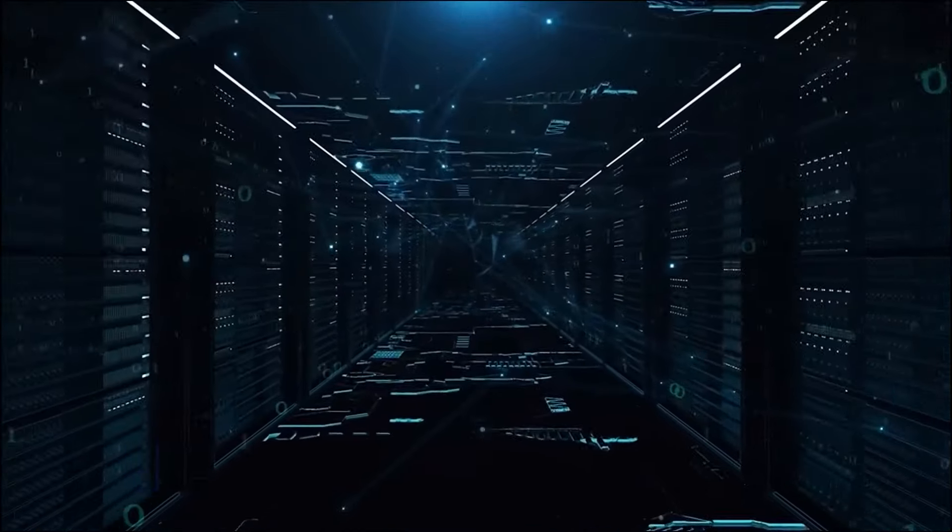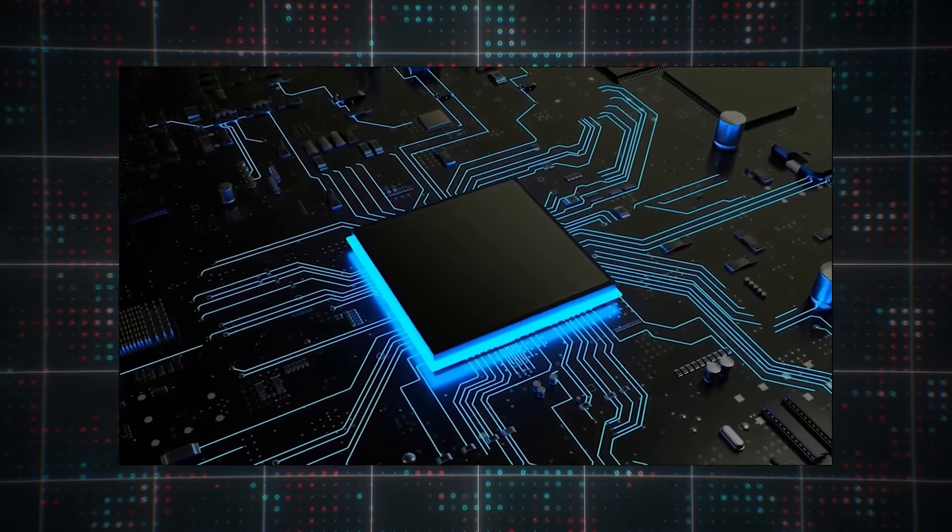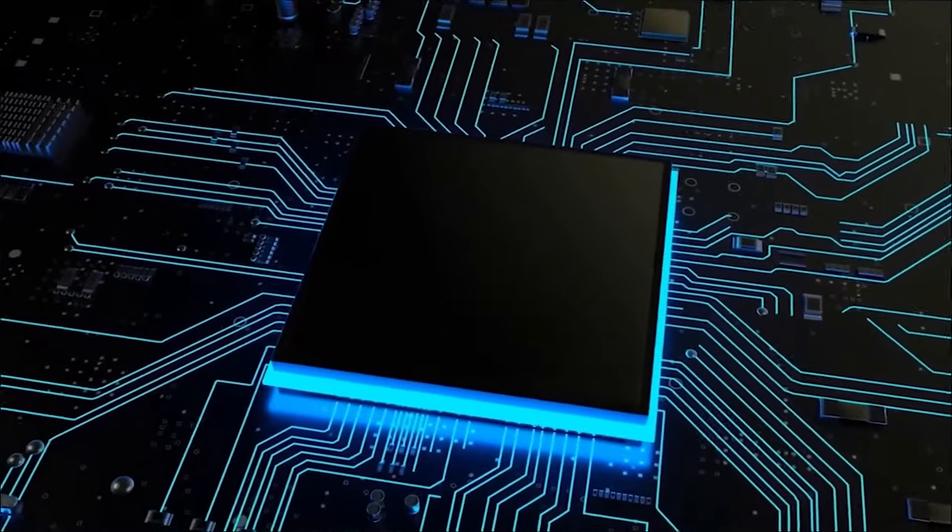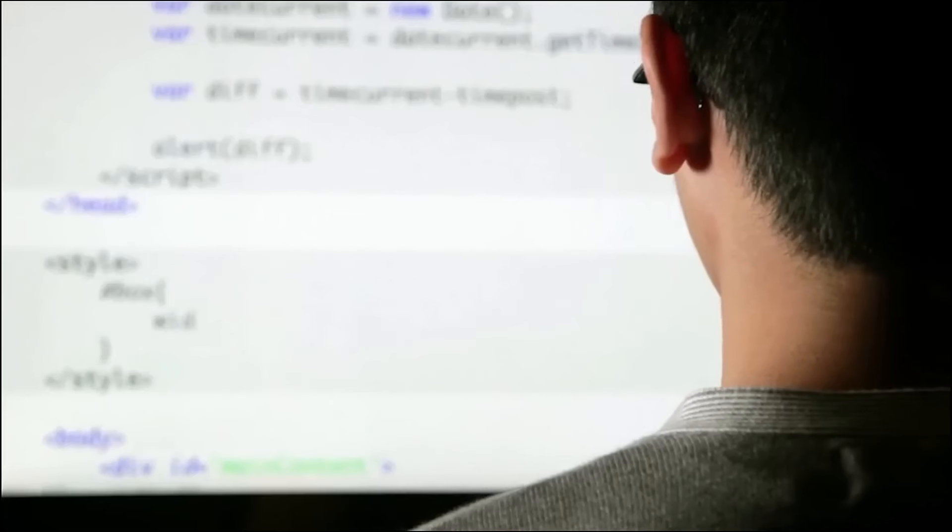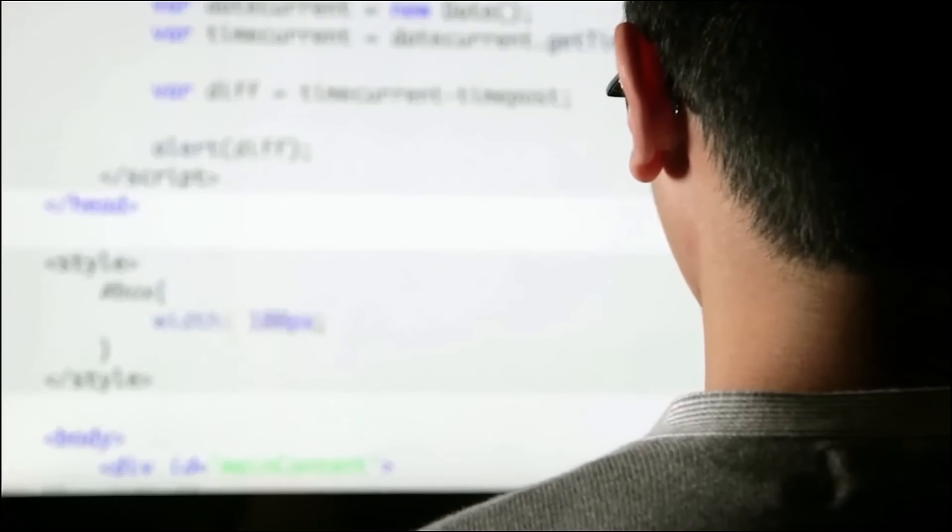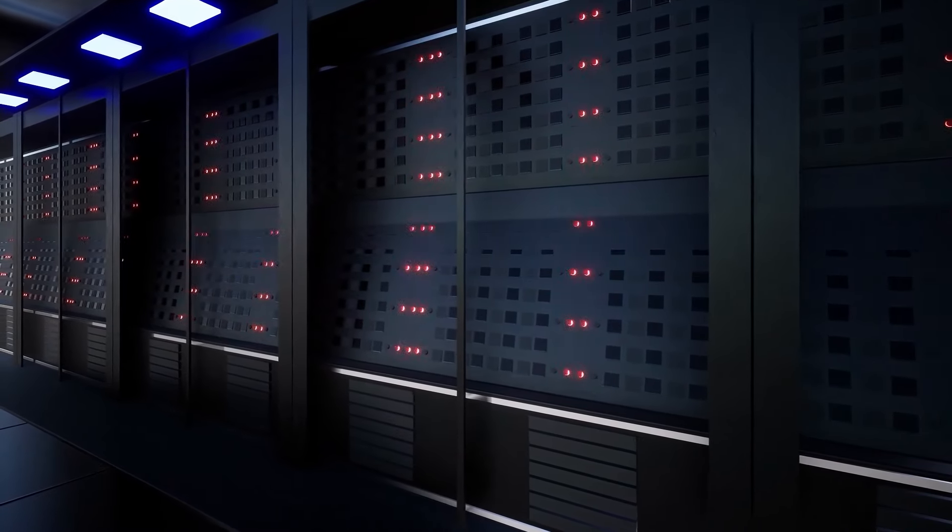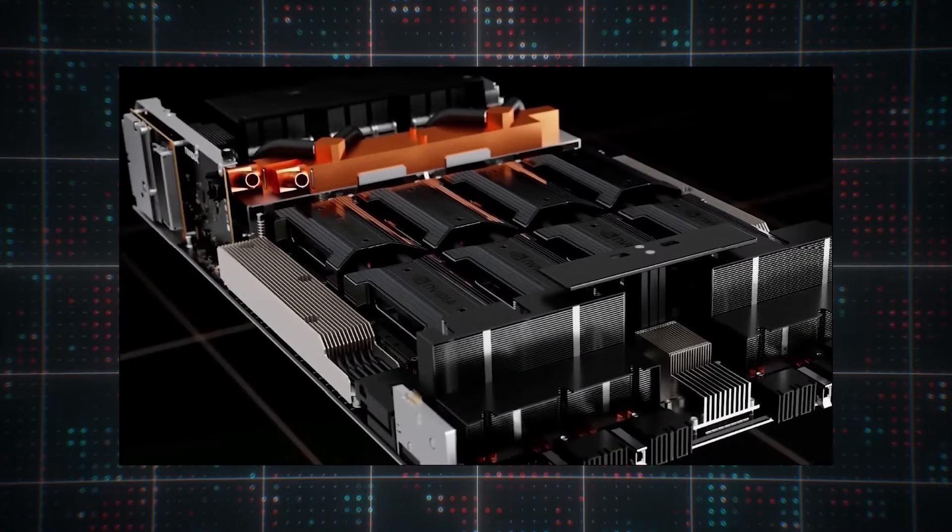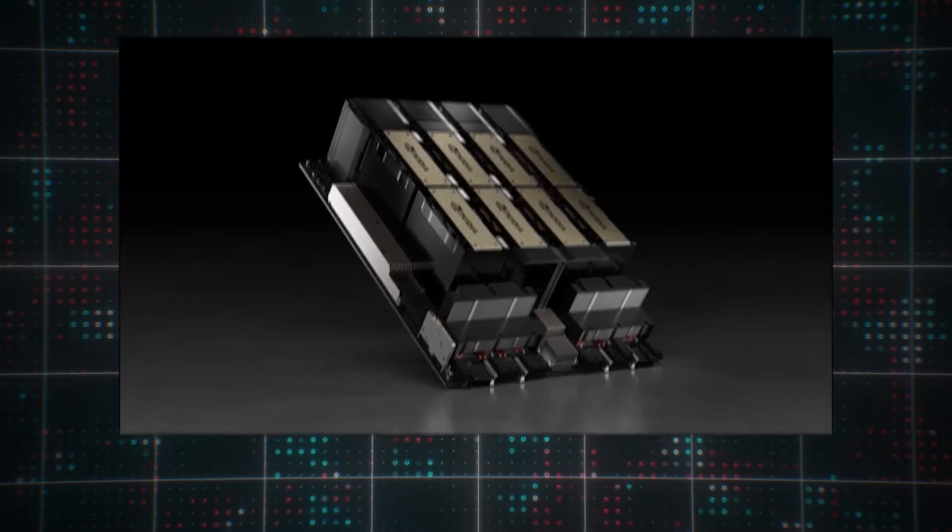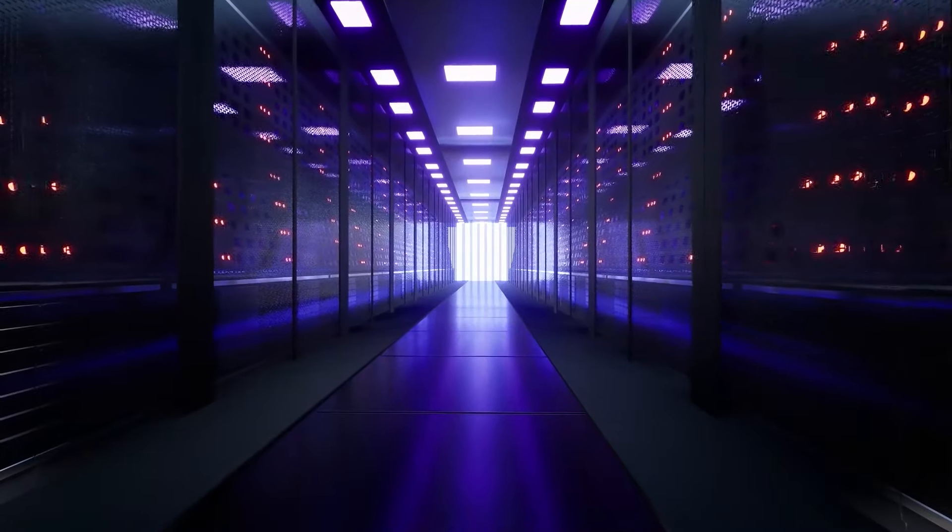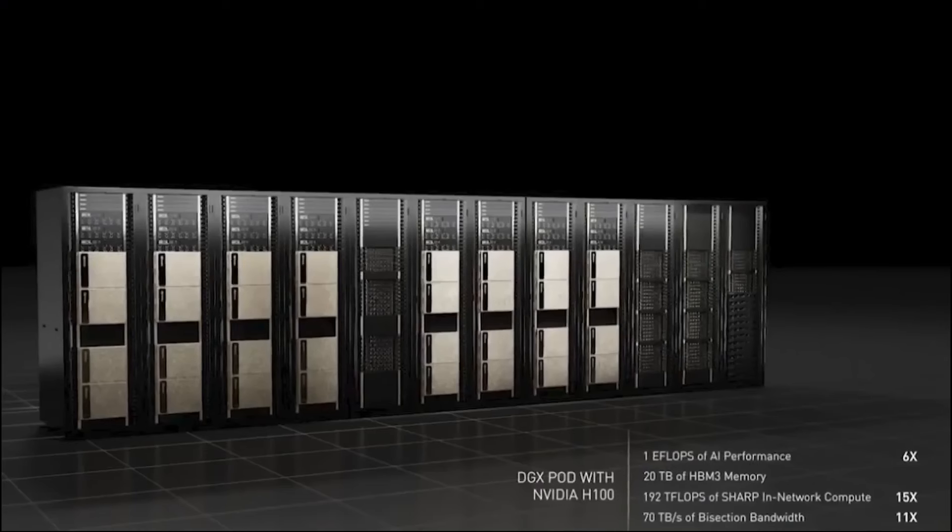The extraordinary bandwidth capabilities of the DGX system are one of its most notable characteristics. With 130 GB per second of bandwidth, the DGX H100 can handle more data than the internet as a whole. This remarkable capacity is attained without the need for pricey transceivers or optics, conserving a significant amount of electricity and lowering operating expenses. With a total power consumption of under 120 kW, the DGX system demonstrates its energy efficiency and establishes it as a pioneer in environmentally friendly high-performance computing.